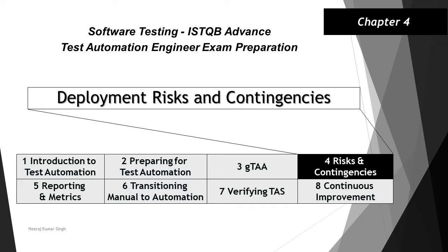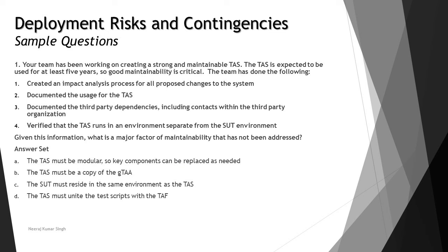Hello friends and greetings for the day. Welcome back to another tutorial on chapter 4. We are done with almost all the topics of chapter 4 and are continuing further with sample questions from the chapter, which is on deployment risk and contingencies. In this chapter we have understood about deployment of IT, risk implementation, assessment, mitigations, and the possibilities of contingency plans as per maintenance.